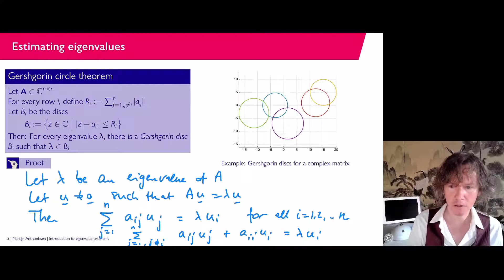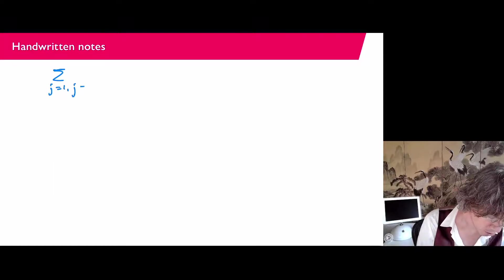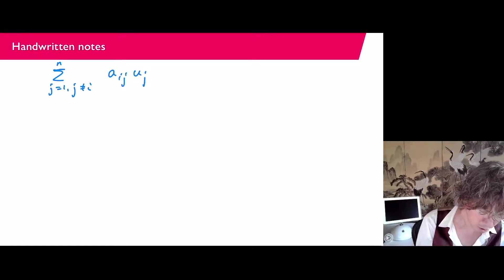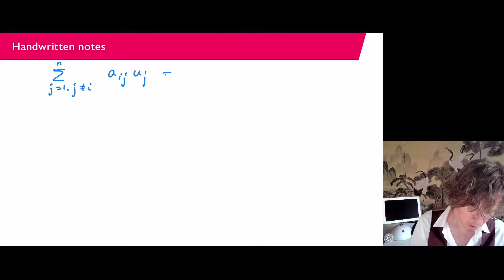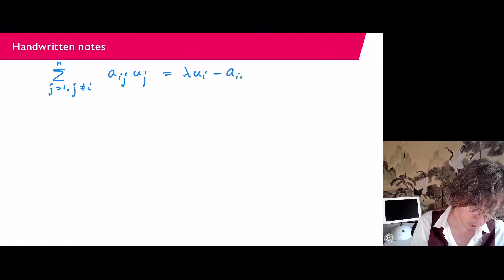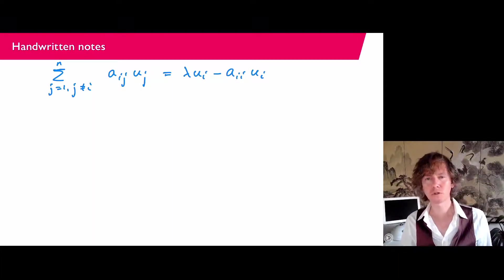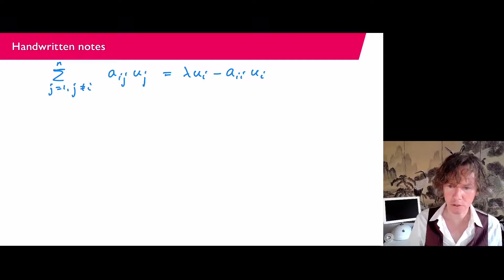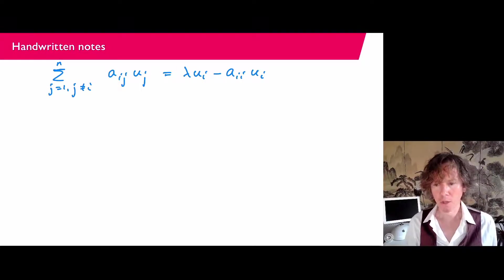What we have then is that apparently the sum j equals 1, j does not equal i, up to n, A_ij U_j should equal λU_i minus A_ii U_i. And you see that this already starts looking a little bit like these Gershgorin disks. But now I'm going to take a special one.